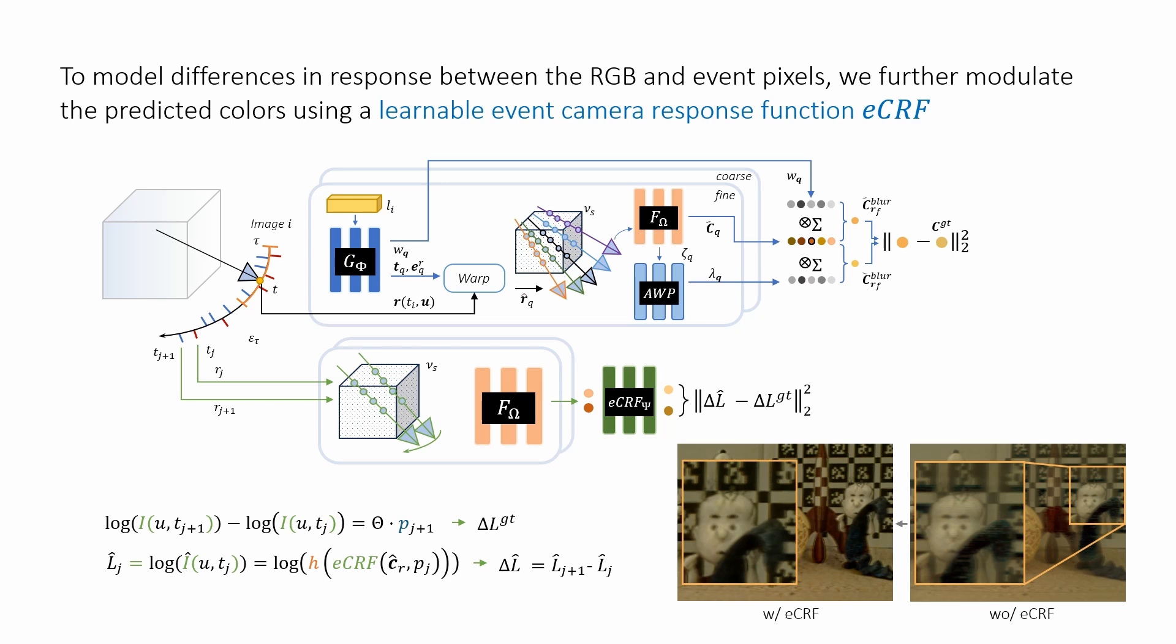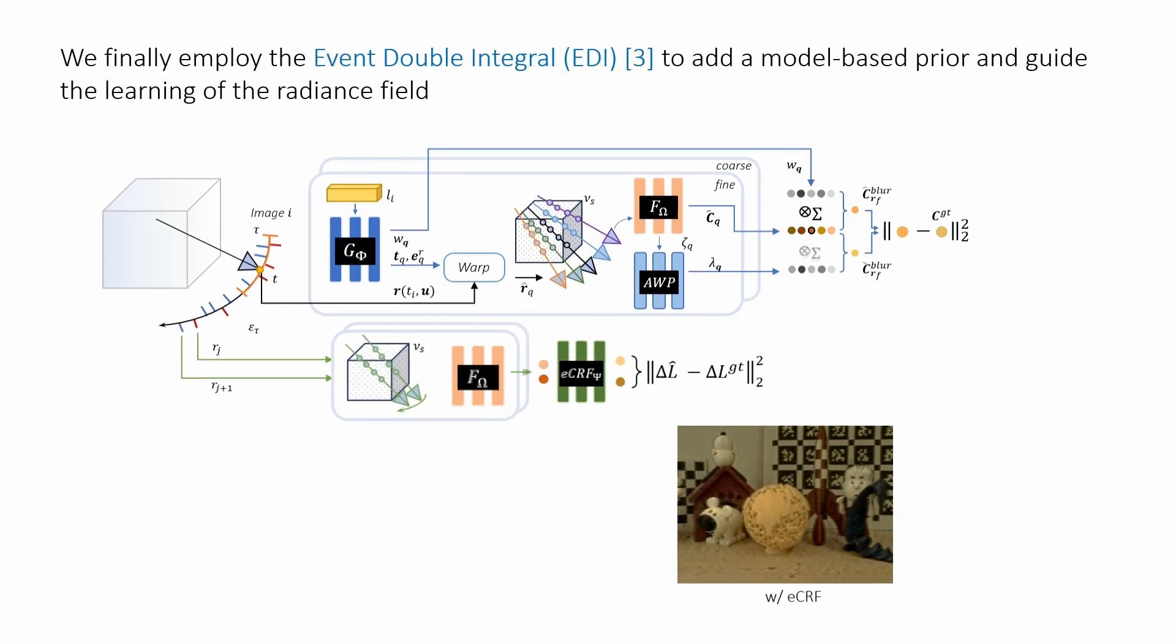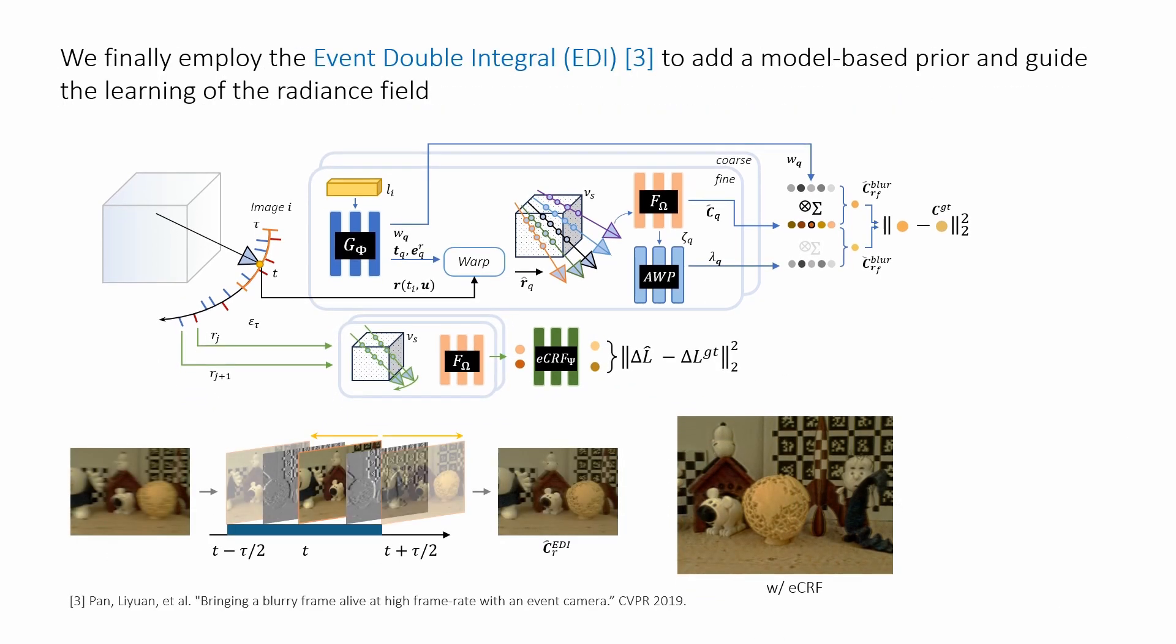We notice that, while increasing the rendering quality, the learnable response function can sometimes overly enhance the contrast of certain details. To address this, we exploit the event-based double integral, EDI, a formulation that relates latent sharp images with events captured during exposure.